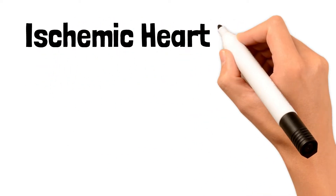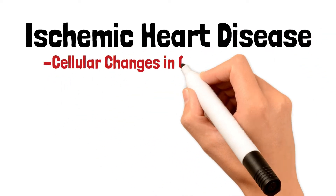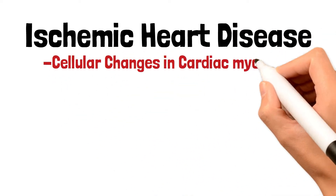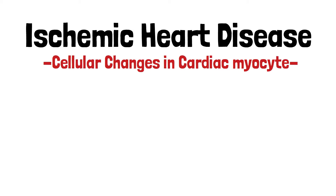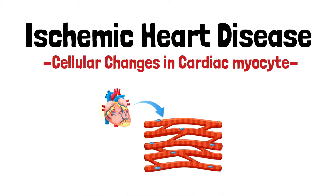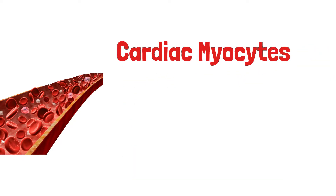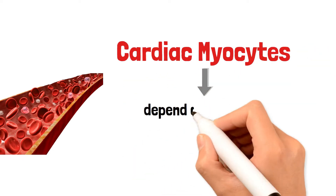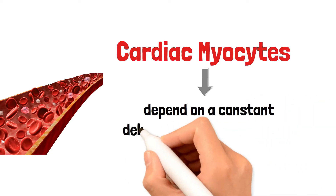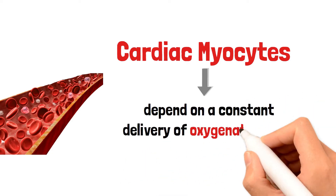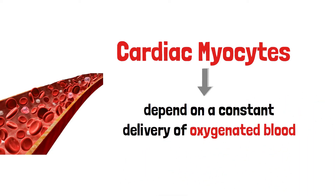Welcome back. In this video we will be talking about the cellular changes that occur in the cardiac myocyte during ischemia. Cardiac myocytes depend on a constant delivery of oxygenated blood in order to power oxidative phosphorylation.